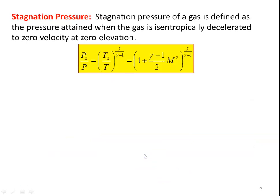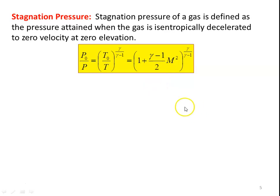And the stagnation pressure: for isentropic flow, we have P0/P = (T0/T)^(γ/(γ-1)), using the relationship between pressure and temperature for isentropic flow, P2/P1 = (T2/T1)^(γ/(γ-1)). Substituting for T0/T, we get P0/P = (1 + (γ-1)/2 · M²)^(γ/(γ-1)).